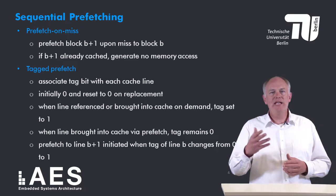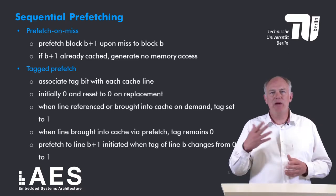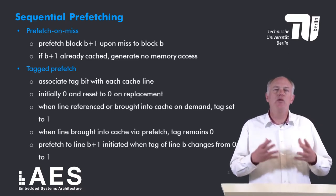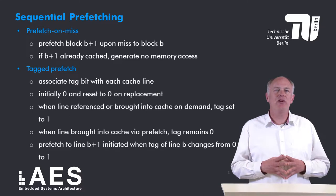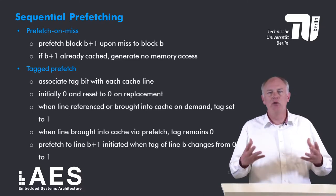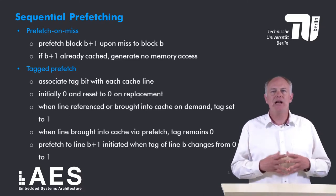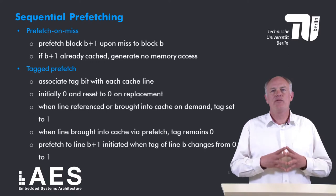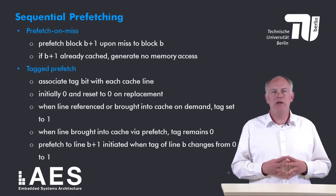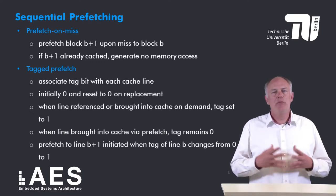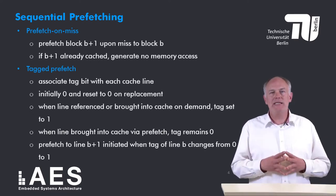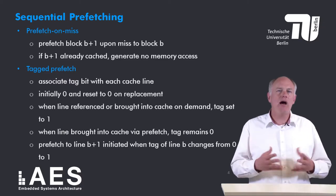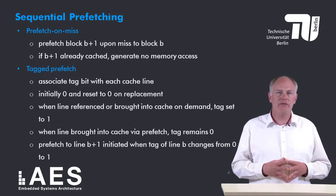In a research paper, Smith et al. found that tag prefetching improved the cache miss rates of a unified cache by 50 to 90 percent for a set of trace-driven simulations. Prefetch on miss, on the other hand, was found to be less than half as effective.